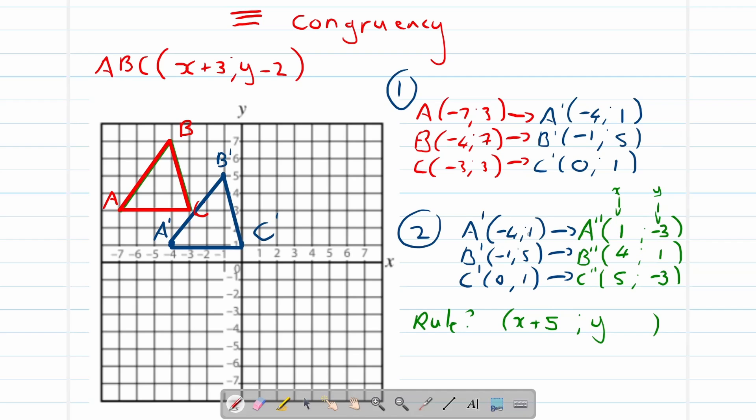Let's look at y. Went from 1 to negative 3, that means we subtracted 4. Let's see. 5 minus 4 is 1, it works out. 1 minus 4 is negative 3, it works out perfectly.